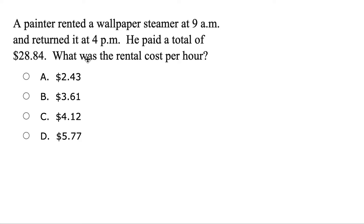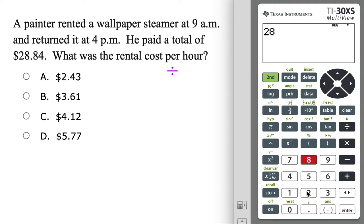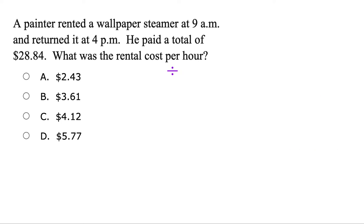This first question is asking: what is the rental cost per hour? We paid this amount and rented it from 9 a.m. to 4 p.m. Anytime you see the word 'per' in math, it always means divide. So we take the rental cost and divide it by how many hours we had it. From 9 a.m. to noon is 3 hours, plus 4 more — so we rented it for 7 hours. 28.84 divided by 7 equals 4.12, so that is the cost per hour.